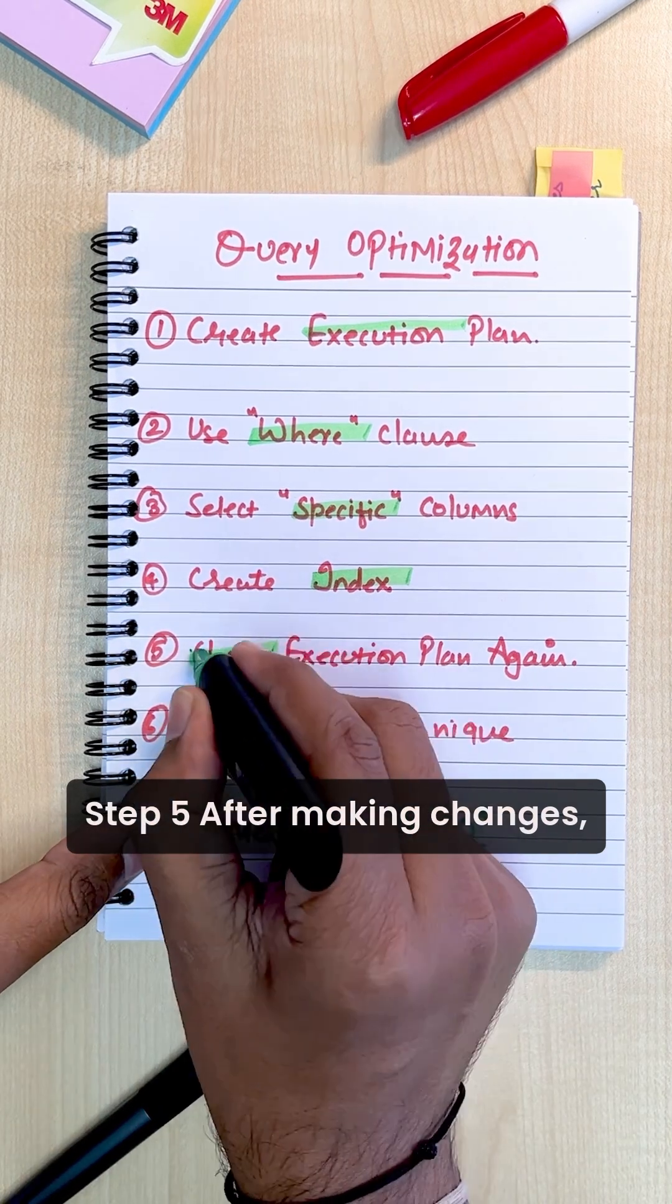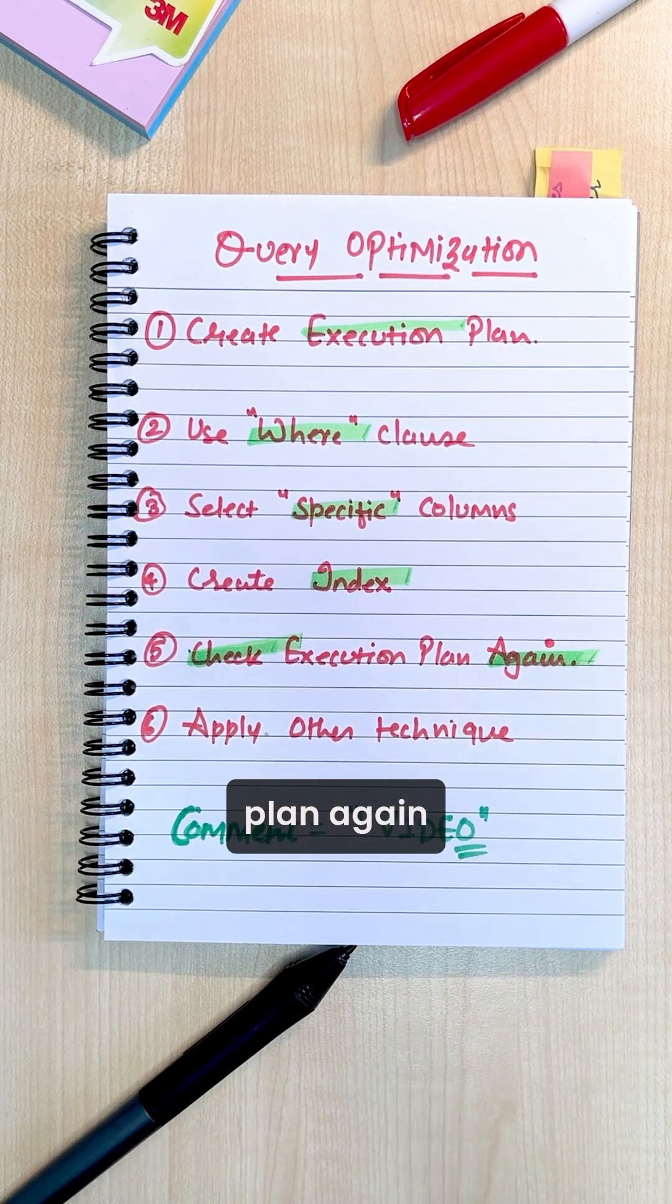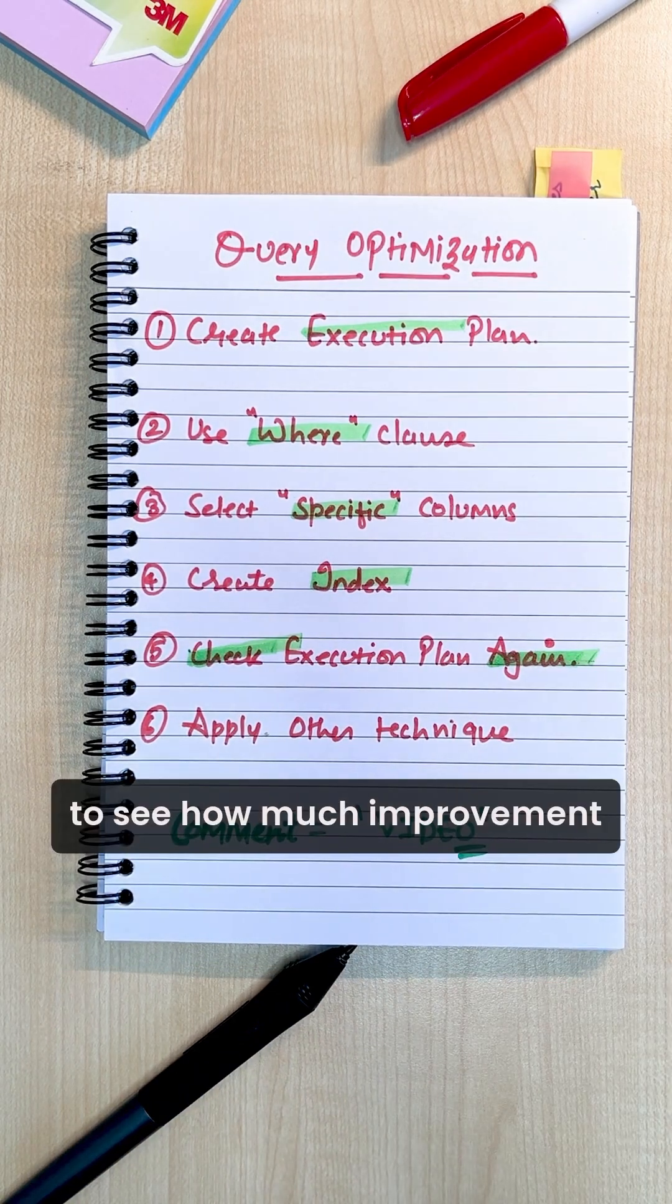Step 5: After making changes, always check the execution plan again to see how much improvement has been made.